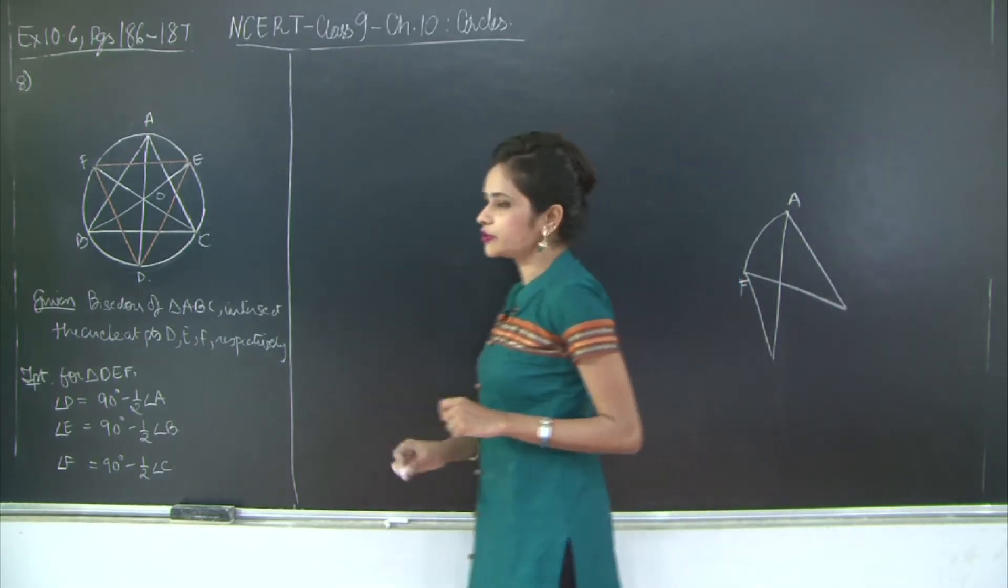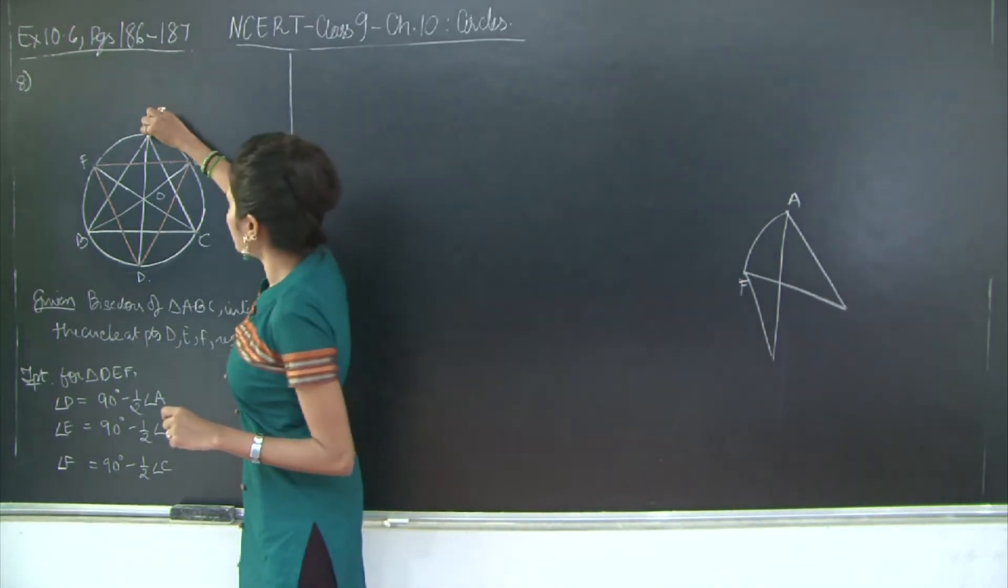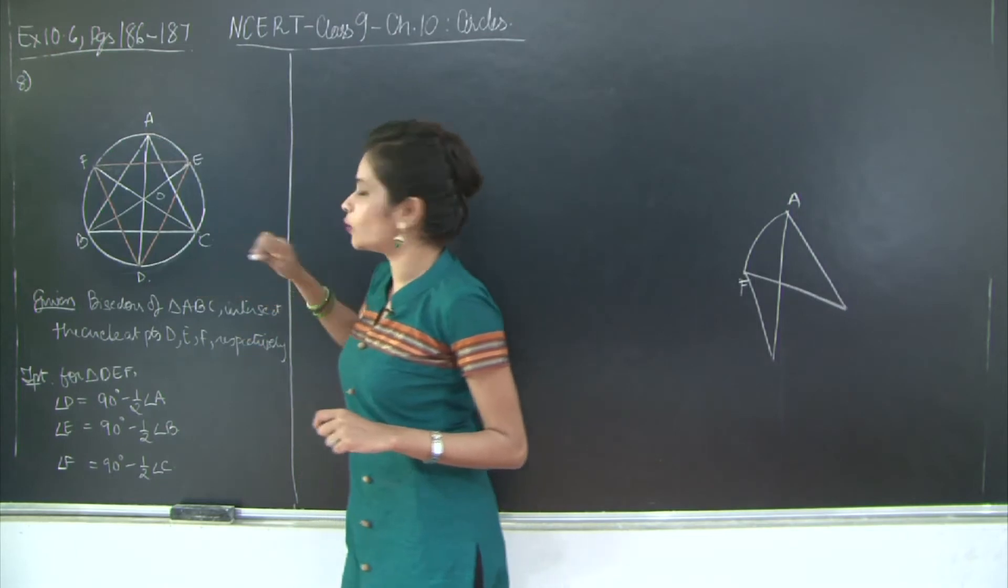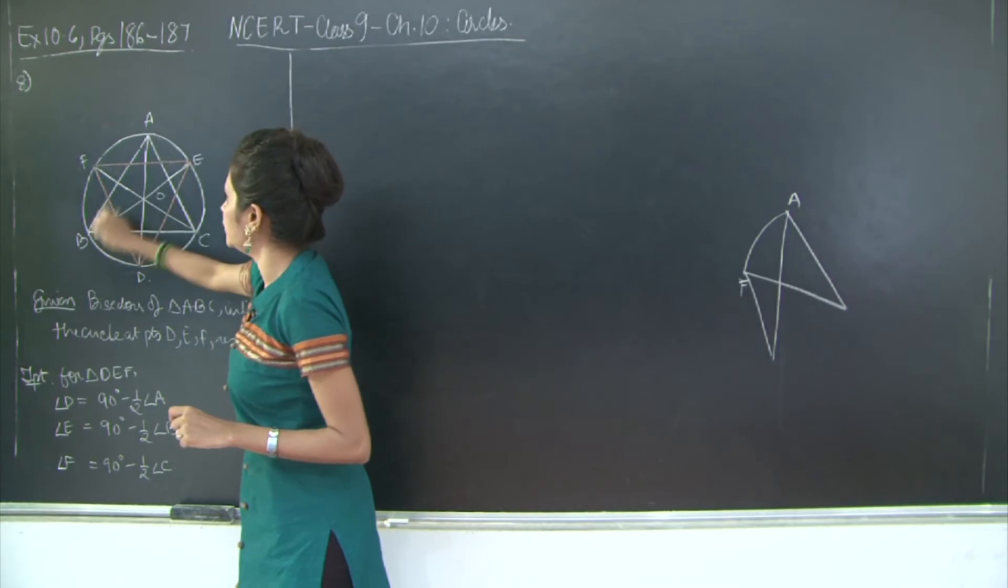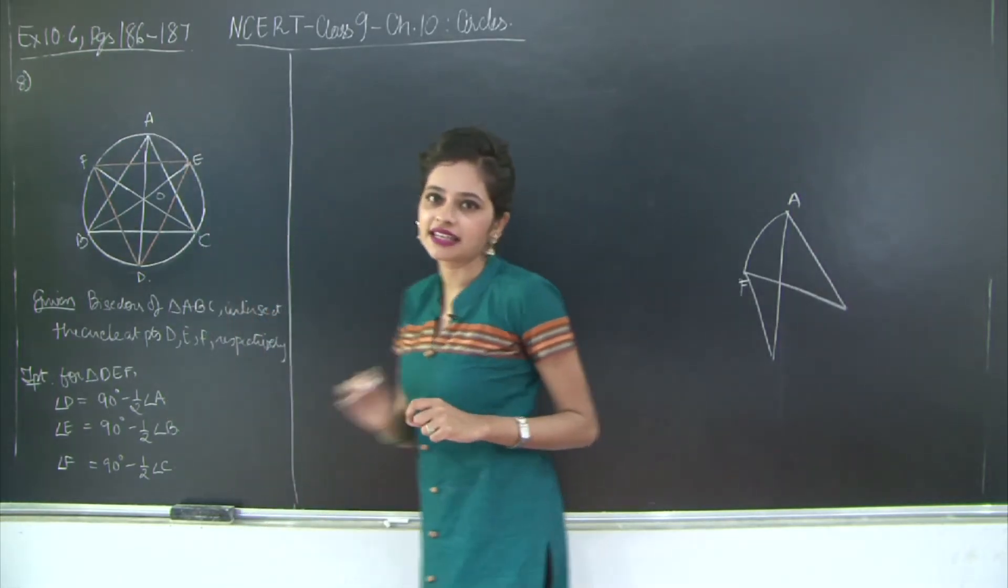So these two angles are equal to each other, and now if you look at arc AE, similarly you will have two angles equal to each other. Which are the two angles? EDA and EBA, because they are the angles subtended in the same arc.